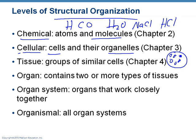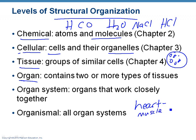If you take a bunch of the same type of cells and put them together, it's called a tissue. For example, your muscle tissue is made up of a bunch of muscle cells. You take a bunch of tissues and put those together, you get an organ. Organs are always made up of more than one type of tissue. For example, the heart has muscle tissue, nervous tissue, and connective tissue — different kinds of tissues come together to make an organ.